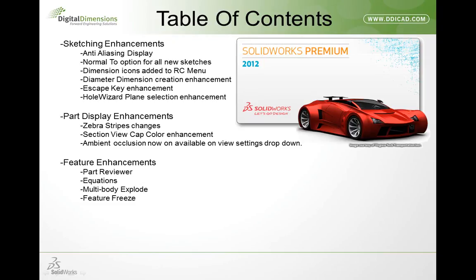Now with the rollback bar and the freeze bar, we can isolate the area of the tree we want to modify. The freeze bar works in the direct opposite of the rollback bar — you grab it from the top of the tree and drag it down, locking all features above from rebuilding. This enables you to speed up your model because you don't have to pay that 10-minute penalty. You only rebuild the features that haven't been frozen, which will speed up a lot of complex models.